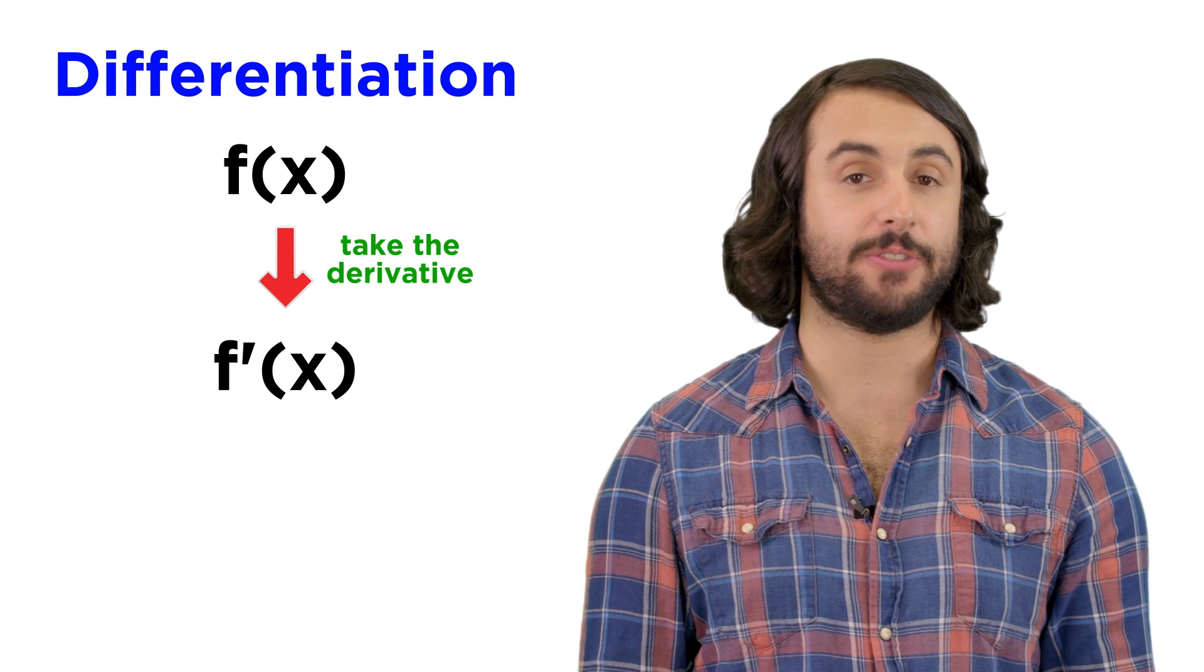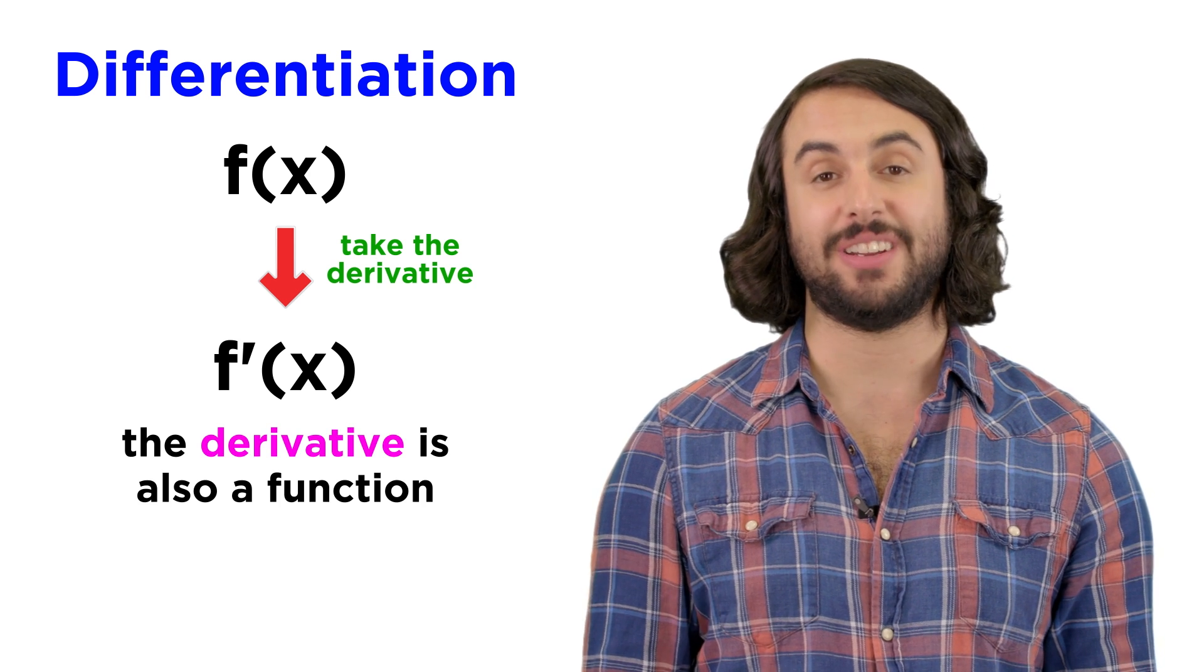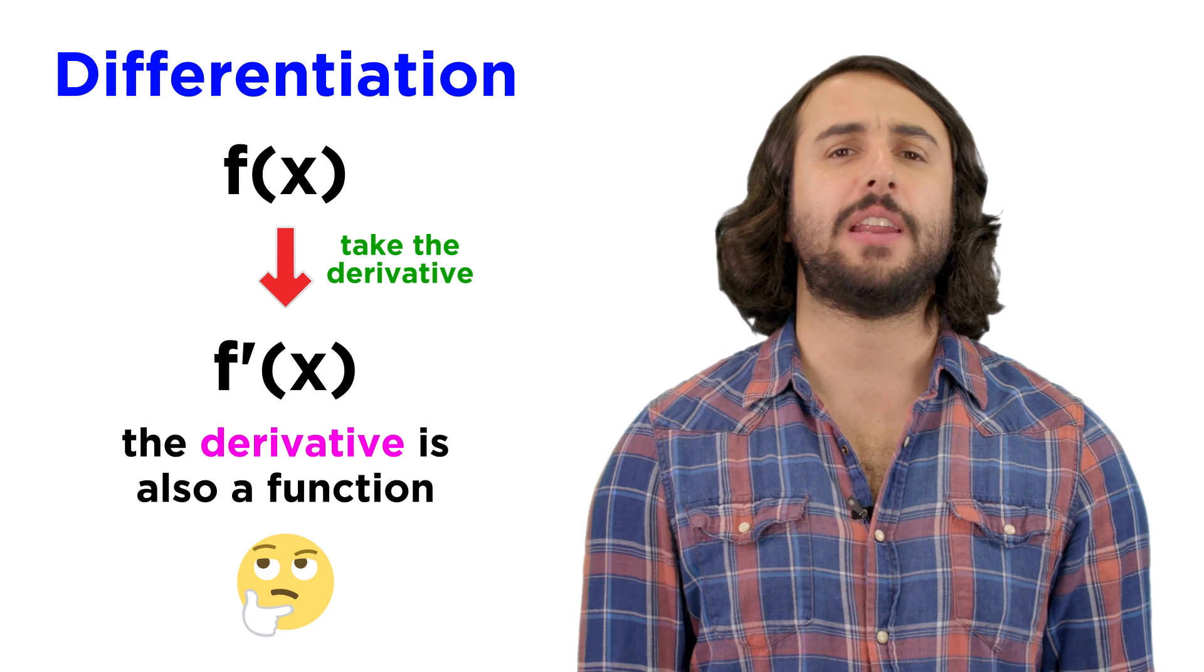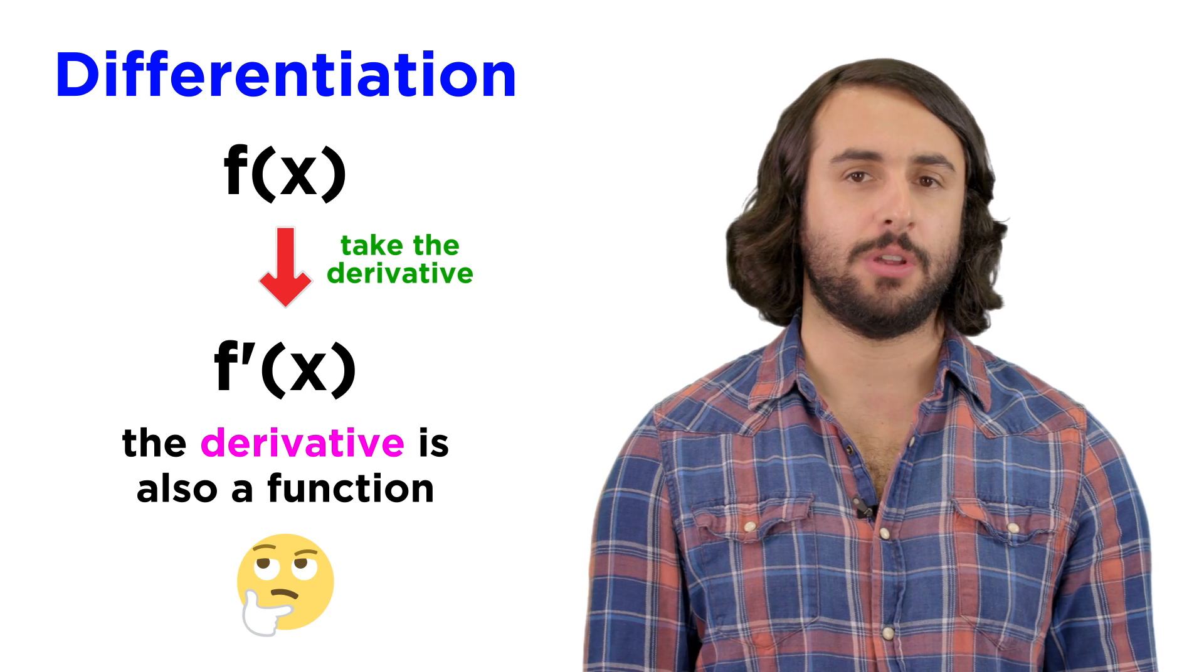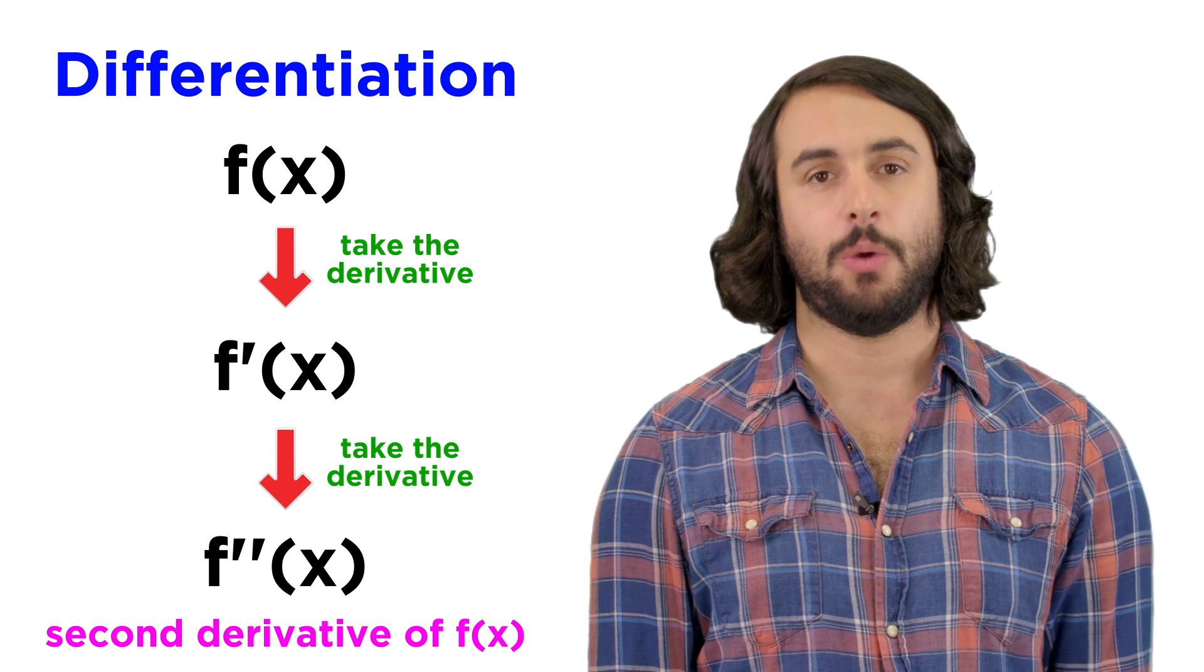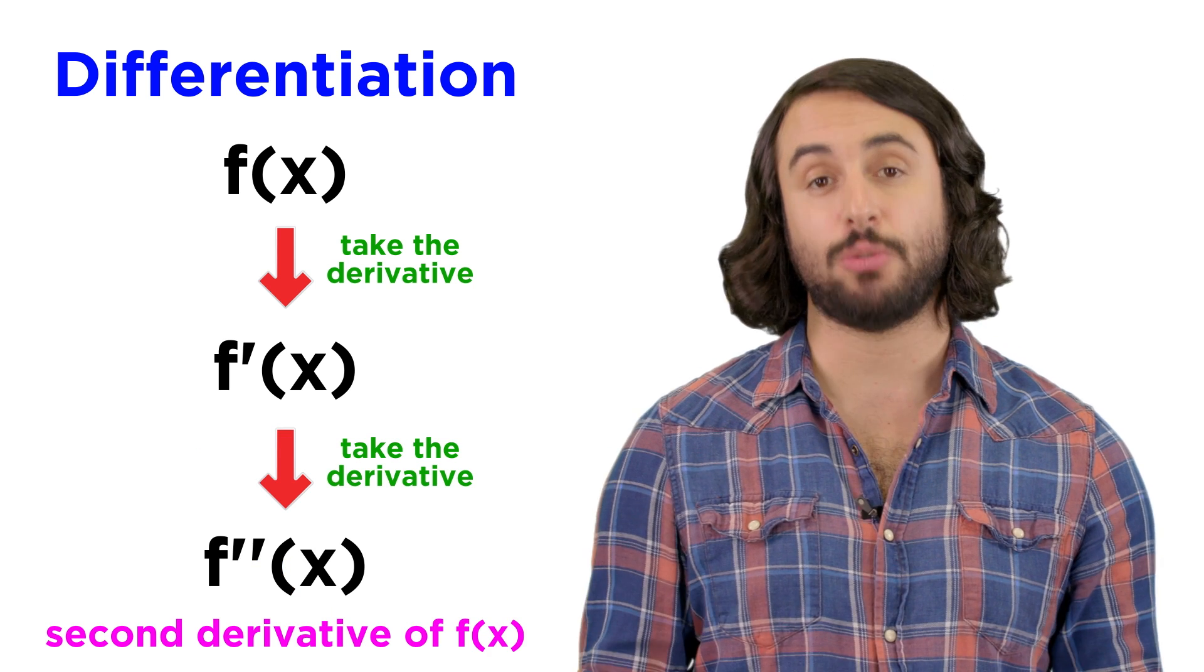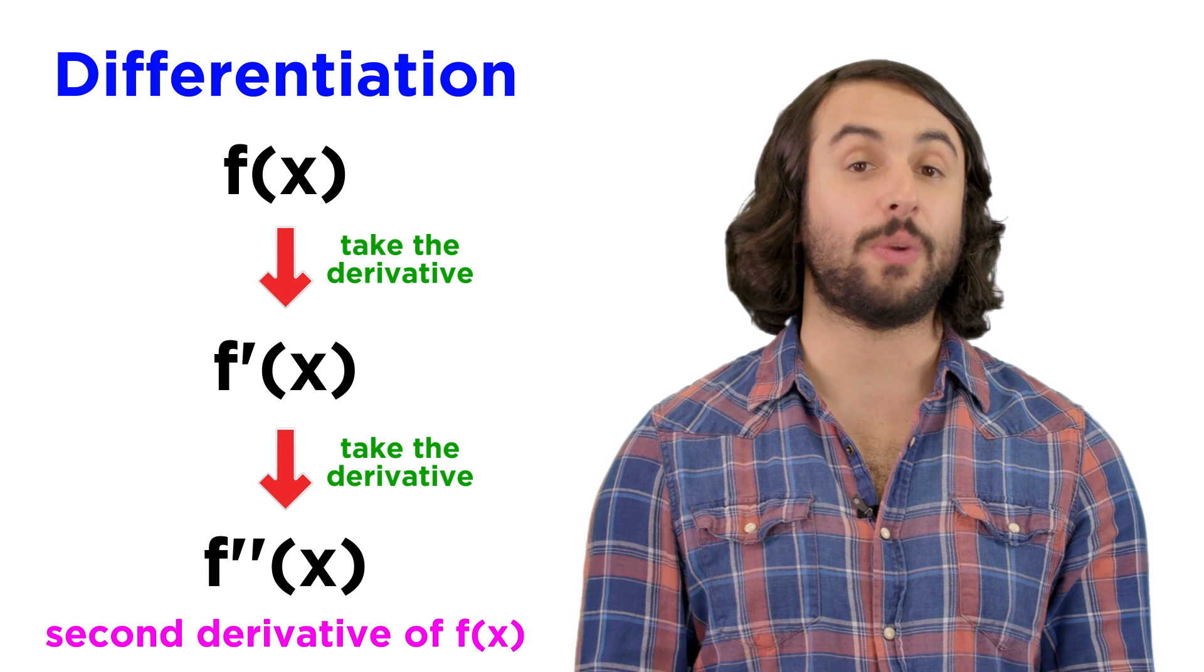We've learned how to take the derivative of a variety of functions, and we know that the derivative of a function is itself a function. But if the derivative is a function, what is to stop us from taking the derivative of the derivative? Well, nothing in fact. We can do this, and we call it the second derivative with respect to the original function.